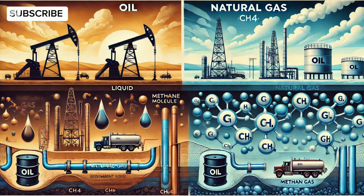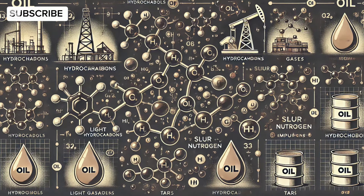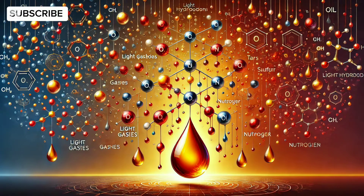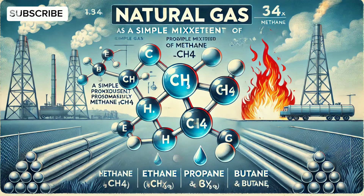Oil is a complex mixture of hydrocarbons with varying molecular weights, ranging from light gases to heavy tars, and it often contains impurities like sulfur and nitrogen. Natural gas, on the other hand, is simpler — predominantly methane, but can also contain small amounts of ethane, propane, butane, and traces of other gases.